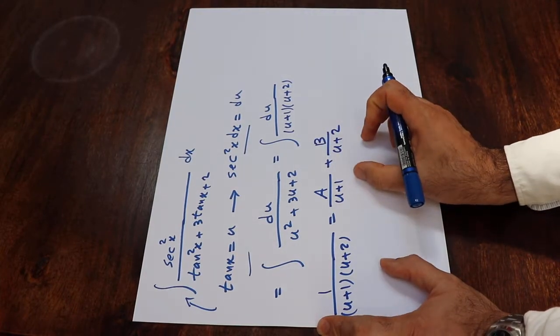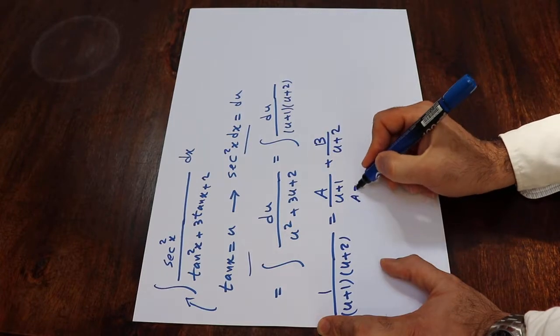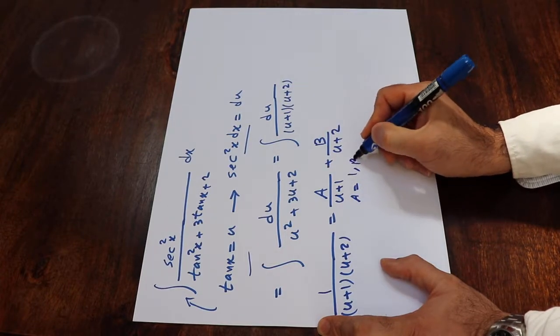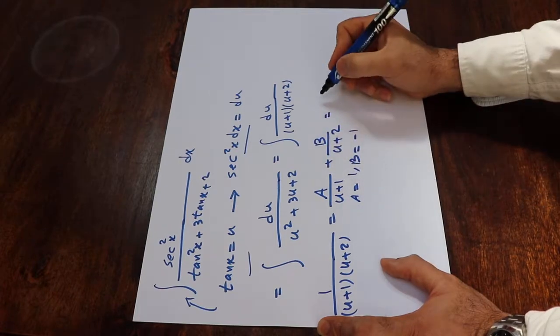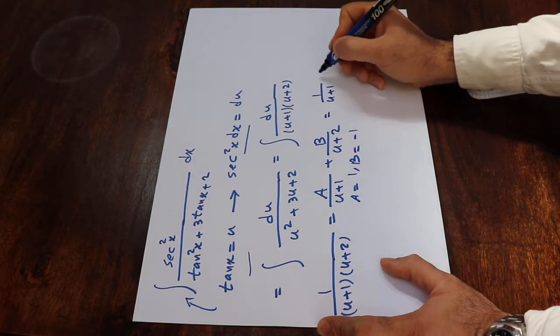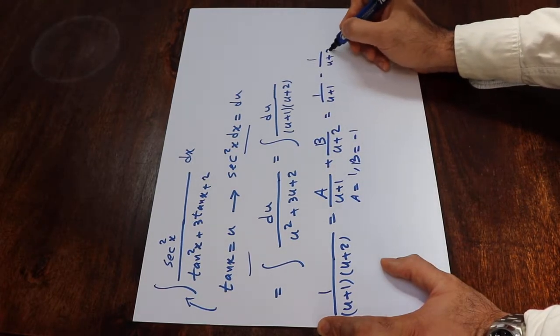So here if you do the algebra, you get a will be equal to 1 and b will be equal to minus 1. Therefore, this one will be equal to 1 divided by u plus 1 minus 1 divided by u plus 2.